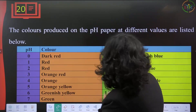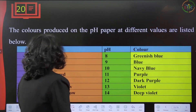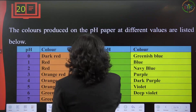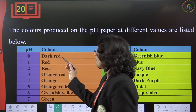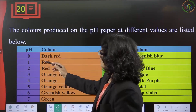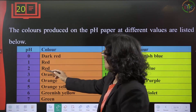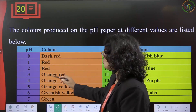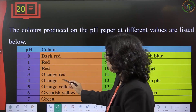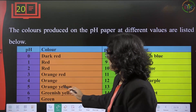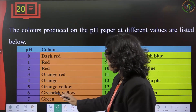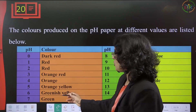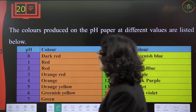The pH color changes go from dark red at pH 0, red at 1, red at 2, orange-red at 3, orange at 4, orange-yellow at 5, greenish yellow at 6, and green at 7.